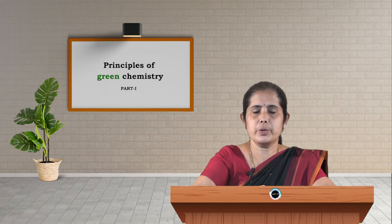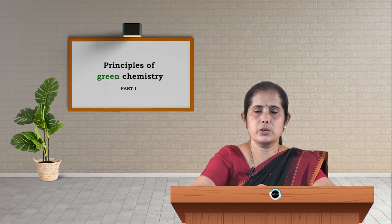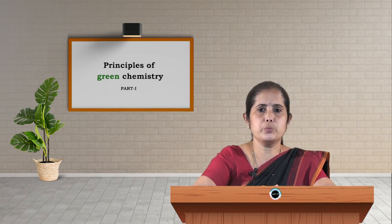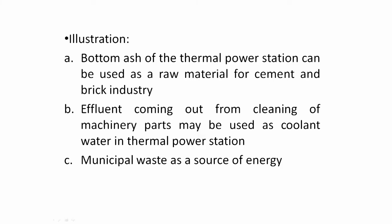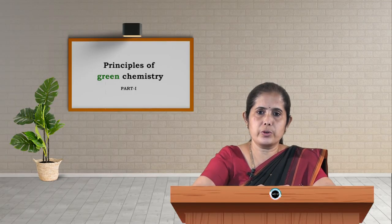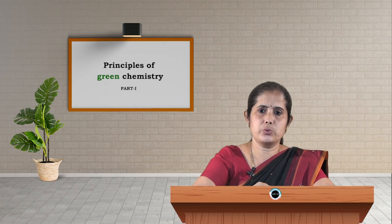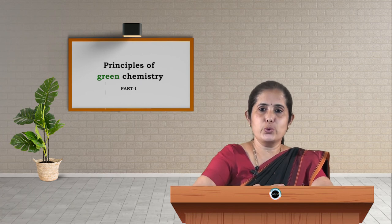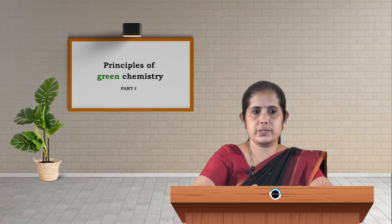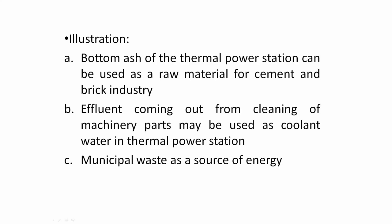It is being used as raw material for other industries. Nowadays we hear that plastic waste is being used for road construction, so plastic will not be dumped into the environment — it is being reused. Plastics are also being used for the generation of fuel. Another example: effluent from cleaning machinery parts may be used as coolant water in a thermal power station. Municipal waste is a big cause of concern, but it can be used as a source of energy.